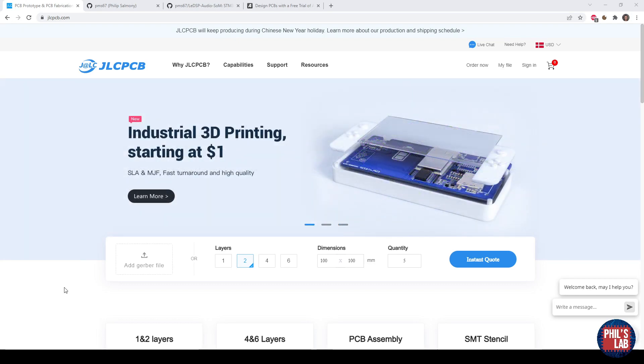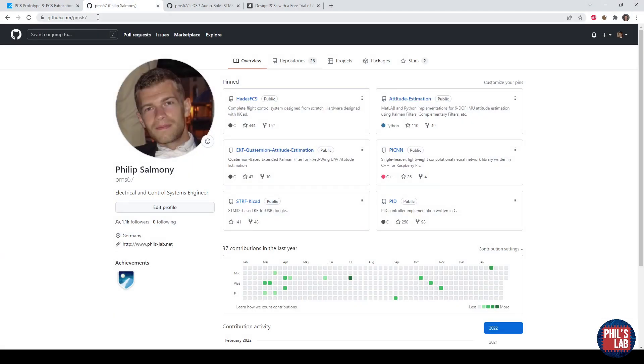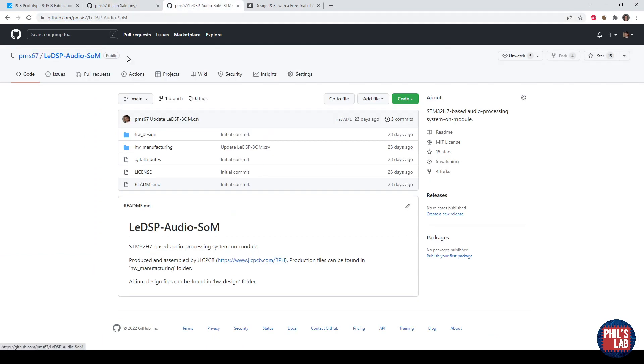If you'd like to have similar boards manufactured you can go to my github repository at github.com/pms67 and navigate to the LUT DSP audio system on module. This contains an STM32F407 and an audio codec and you can design your own daughter boards for this and I've made a previous video on my channel telling you how this system on module is made.